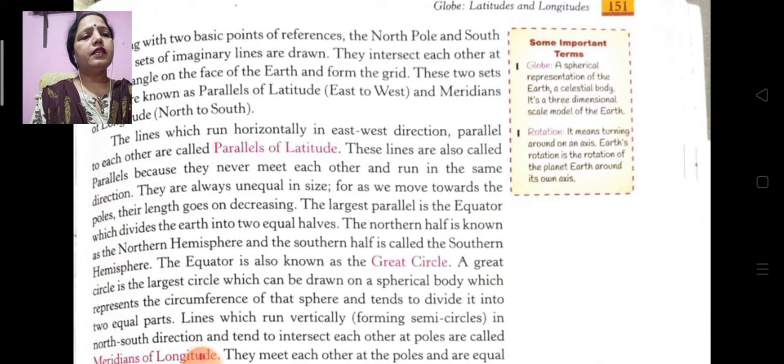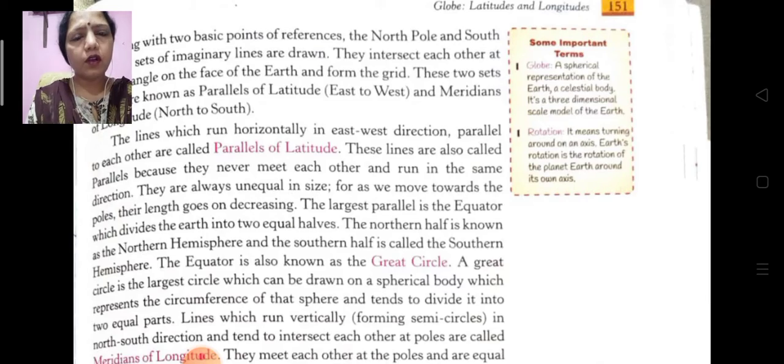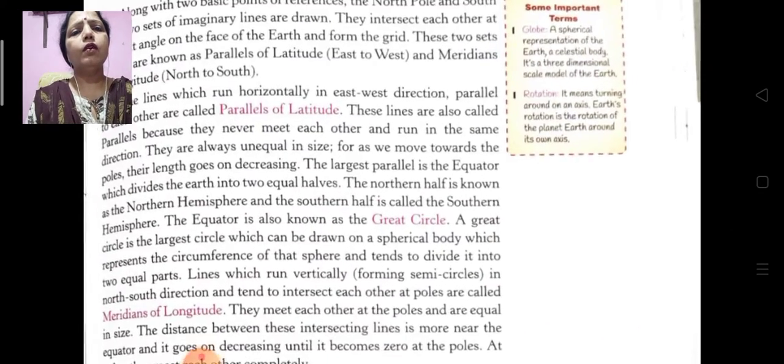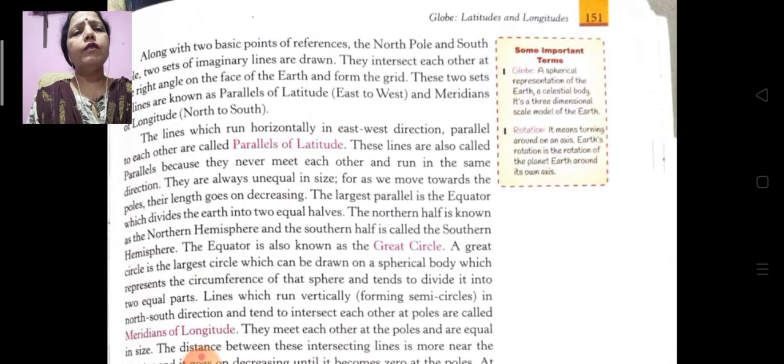So now turn your page and now we will know about some important facts of globe. This is a spherical representation of the celestial body. It's a three-dimensional scale model of the earth and rotation. What is rotation? It means turning around on the axis.